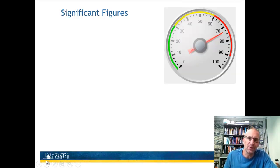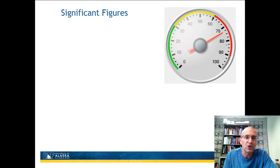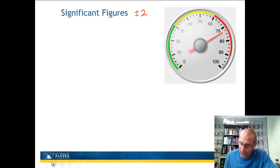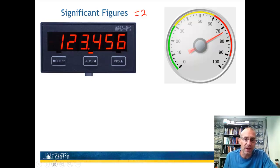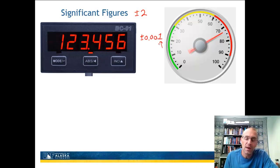I'm going to discuss significant figures. You can think of a numerical representation of a number as a gauge — it's trying to give you an idea of what the value is. There's a particular number of significant figures or resolution you can read. Looking at this gauge with tick marks every two, I don't have very good significant figures — only plus or minus 2. With a digital display, it's easier to know exactly what my significant figures are, down to three decimal places, which is plus or minus 0.001.